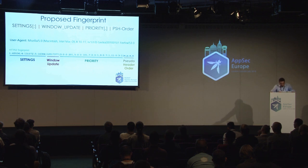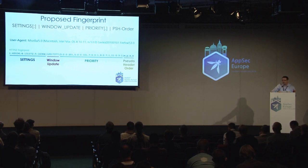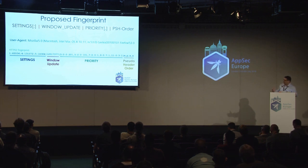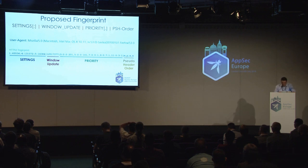Now we have the final fingerprint. We have four elements — settings frame, Window Update Frame, priority frames, and pseudo header order — with headers encoded by their initial letters. It's like a timeline: ideally we'd end the fingerprint at the settings frame — that would be the shortest time to fingerprint a client without waiting for the first request. But there's a trade-off between time and complexity. I think it's good enough because a client would not initiate an HTTP connection without intending to send a request.